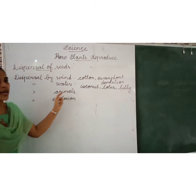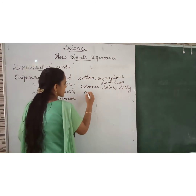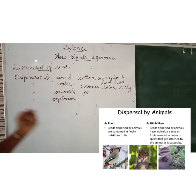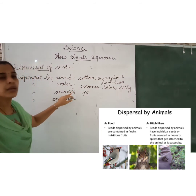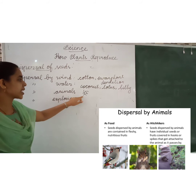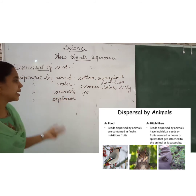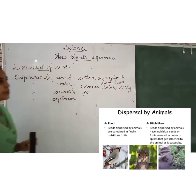Third is dispersal by animals. Some plants' seeds have hooks and spines. These types of seeds stick to the bodies of animals or birds and are spread from one place to another place. What are the examples? Cocklebur and burdock.